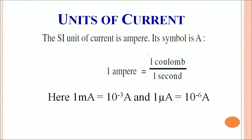How do we measure current? The SI unit of current is ampere, it is denoted by capital A. One ampere is defined as 1 coulomb upon 1 second. What it means is that if a net charge of 1 coulomb flows through a perpendicular surface or perpendicular cross sectional area of the conductor in 1 second, we say a current of 1 ampere has been generated.